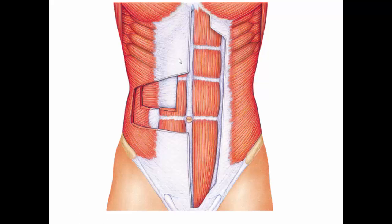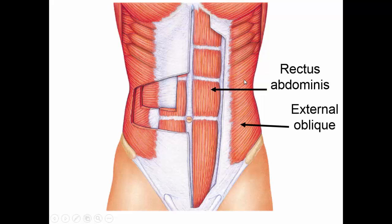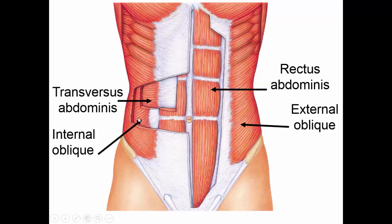Your abdominal muscles are in several layers. The outermost straight layer is the rectus abdominis. Then you have the external obliques, which come down and go under the rectus abdominis. If we peel back the external obliques, we see another set of oblique muscles going in the other direction — these are the internal obliques. And if we peel those back, there's a group of muscles that go straight across, known as the transversus abdominis. The external obliques, internal obliques, and transversus abdominis all help keep your abdominal contents compressed.